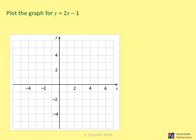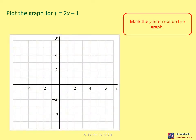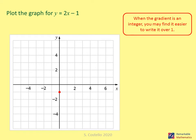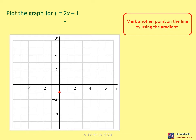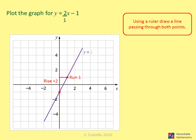Plot the graph of y equals 2x minus 1. Mark the y-intercept at minus one. When the gradient is an integer, it helps to write it as over one — here that gives a rise of two and a run of one. Mark another point from the y-intercept using the rise of two and run of one, use a ruler to draw the line through both points, and label the line.